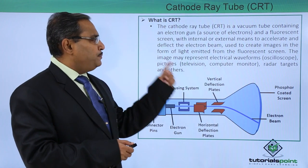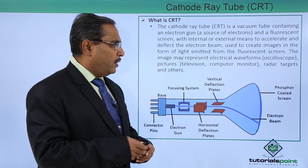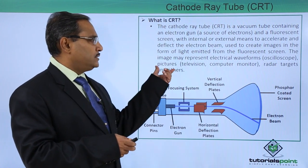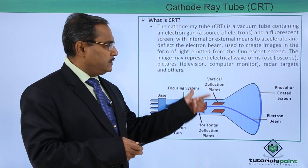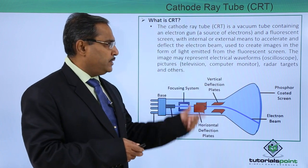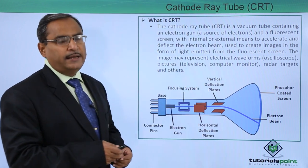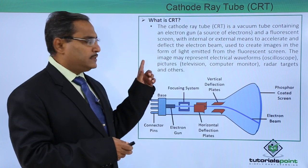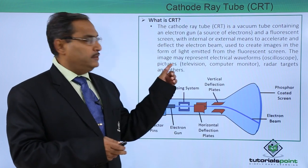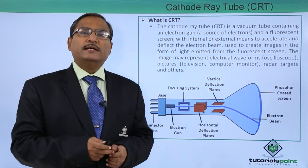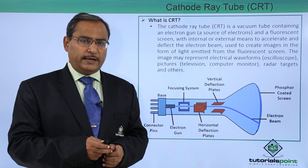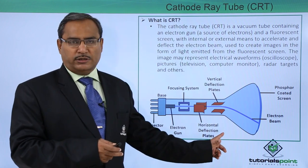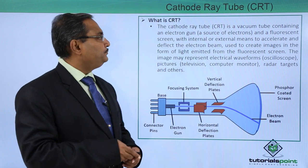The image may represent electrical waveforms in an oscilloscope, pictures in televisions, computer monitors, radar targets, and many other applications. These are the different applications where CRTs are used. This is the basic construction diagram of one CRT.